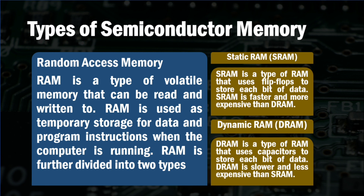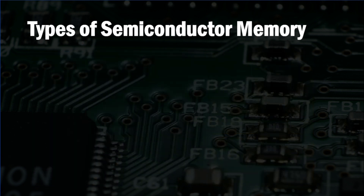The second type of random access memory is dynamic RAM (DRAM). DRAM is a type of RAM that uses capacitors to store each bit of data. DRAM is slower and less expensive than SRAM.